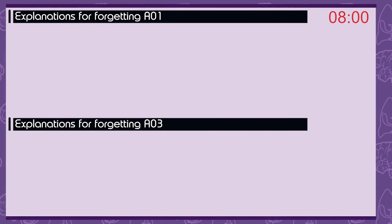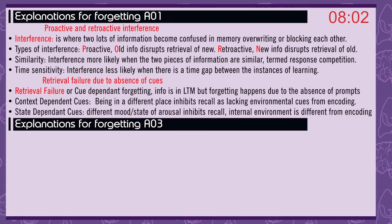Explanations for forgetting: proactive and retroactive interference. Interference is where two lots of information become confused in memory, overwriting or blocking each other. Types of interference: proactive — old information disrupts retrieval of new; retroactive — new information disrupts retrieval of old. Similarity: interference is more likely when the two pieces of information are similar, termed response competition.